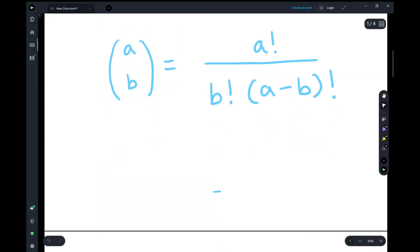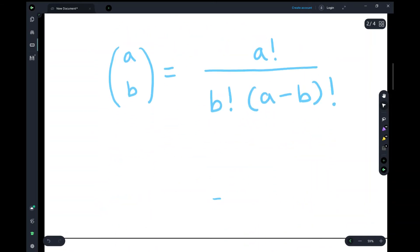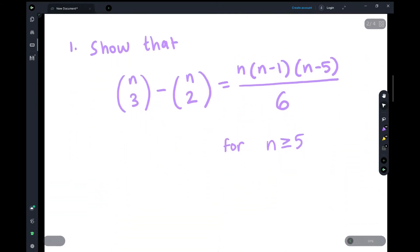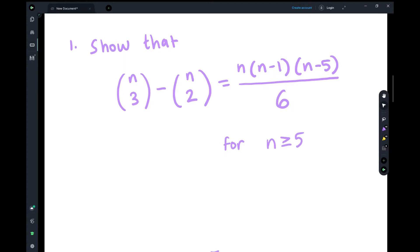So let's do our first example, which is: show that (n choose 3) minus (n choose 2) equals n times (n minus 1) times (n minus 5) over 6 for all n greater than or equal to 5. To start this problem, we're going to just focus on the left side and manipulate this to see if we can somehow get this right-hand side.